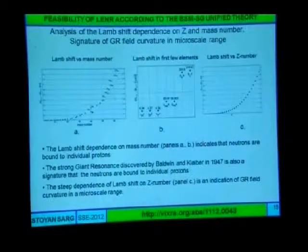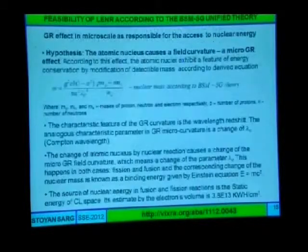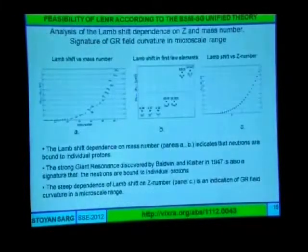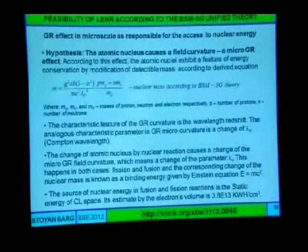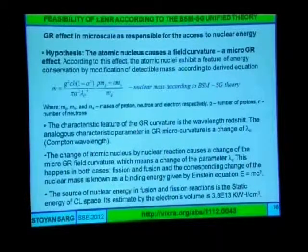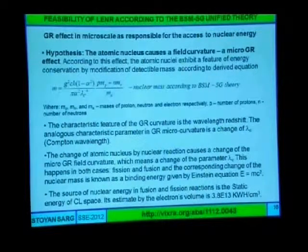Here is another proof that the arrangement of the protons and neutrons — neutrons are arranged over the proton — and they oscillate. This oscillation is found in this graph. From this graph you can see there is one another interesting effect: a general relativistic effect at the micro scale. And this general relativistic effect causes the mass outside of this field to be detected smaller. This, in fact, explains the binding energy.